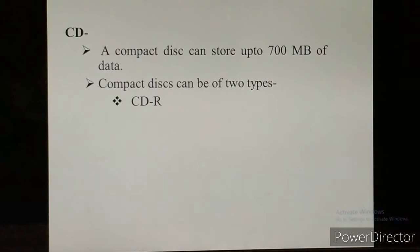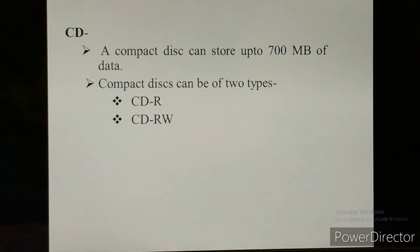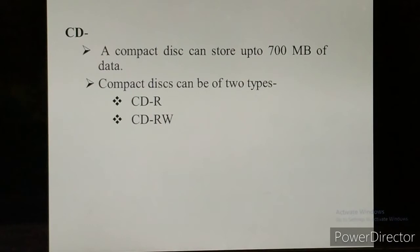The second type of compact disk is CDRW — Compact Disk ReWritable. Data can be read and written so many times; you can erase the data and write again. But in a CDR you can write only once. The difference between CDR and CDRW: in CDR you can write data only once, but in CDRW you can write data many times.